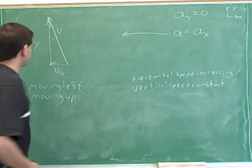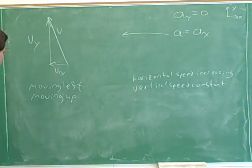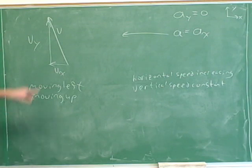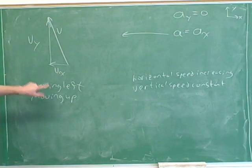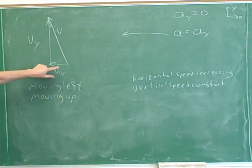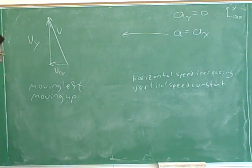We can say one other thing here. The vector is drawn so you can see we're moving both left and upward, but which component is more prominent? We actually do not have very much horizontal velocity. You can see from the triangle that the vertical leg is much longer than the horizontal leg, so our vertical speed is going to be much greater than our horizontal speed.